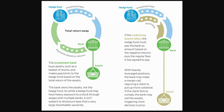In the most simple terms, a total return swap is just a contract — a financial contract between two parties. So it's bilateral: party A, party B, where one party agrees to pay the other the total return of an asset. In this case we'll use AMC as the asset. The receiving party gets the income generated by the asset as well as any capital gains, while the party that's paying gets a fixed or floating rate. So one party is getting the gains and losses to the asset being swapped, and the other person is getting a flat payment for that deal.